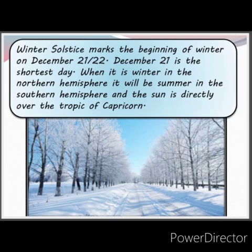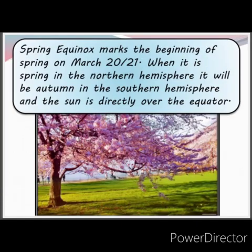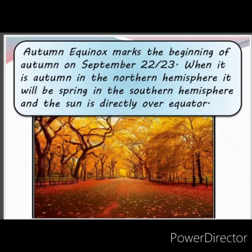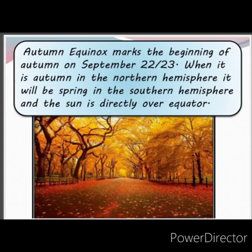Winter solstice marks the beginning of winter on December 21st and 22nd. December 21st is the shortest day; when it is winter in the Northern Hemisphere, it will be summer in the Southern Hemisphere, and the Sun is directly over the Tropic of Capricorn. Spring equinox marks the beginning of spring on March 20th and 21st; when it is spring in the Northern Hemisphere, it will be autumn in the Southern Hemisphere, and the Sun is directly over the equator. Autumn equinox marks the beginning of autumn on September 22nd and 23rd; when it is autumn in the Northern Hemisphere, it will be spring in the Southern Hemisphere, and the Sun is directly over the equator.